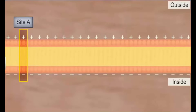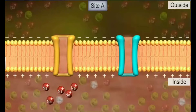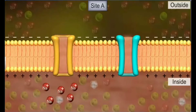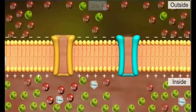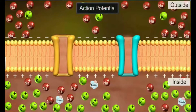When a stimulus is applied to a site, say site A, on the polarized membrane, the sodium ion channels open and the membrane at the site becomes freely permeable to sodium ions. This leads to a rapid influx of sodium ions that reverses the polarity of the site — the outer surface of the membrane becomes negatively charged and the inner surface becomes positively charged. This reversal of polarity across the two sides of the membrane is called depolarization.